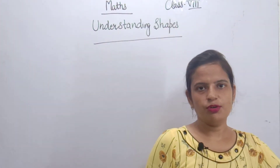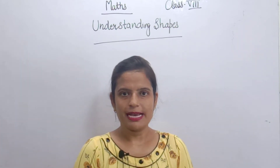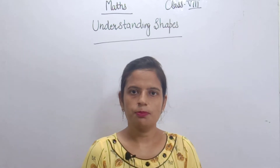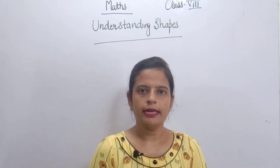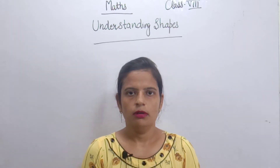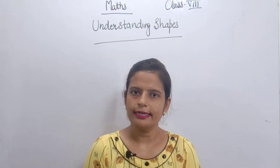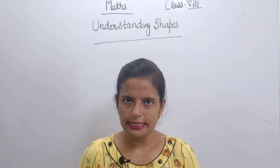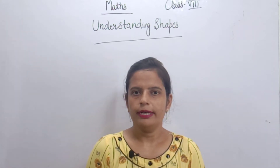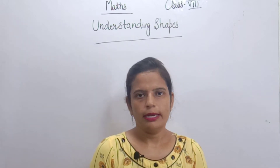Hello my dear students, how are you all? I hope you all are good and fine. Today we are going to start our Maths chapter, Understanding Shapes. So what are we going to study? First we will study parts of the Quadrilateral. After that we will study two types: Convex Quadrilateral and Concave Quadrilateral. After that we will read about properties for rectangle, square and parallelogram. So one by one we will start.